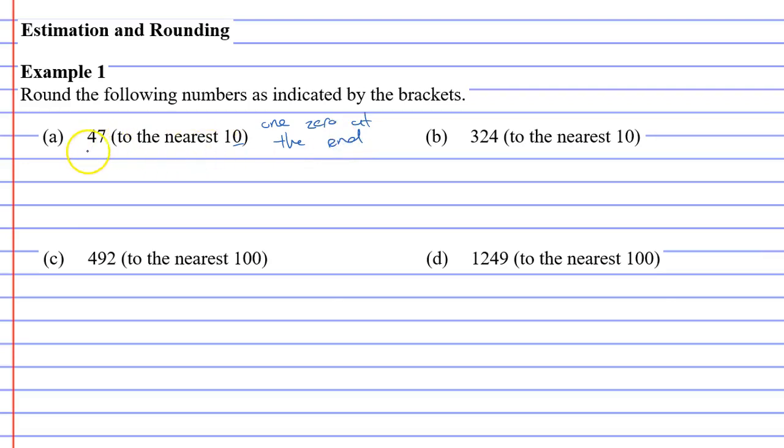When we look at 47, we want to round it so that it is either 40 or 50. The reason for that is it's either going to be four tens or five tens, hence rounding it to the nearest 10.